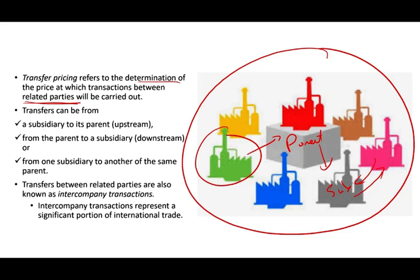Intercompany transactions represent a significant portion — billions of dollars — in international trade. That's why tax plays a big role in this topic, because when transfer pricing occurs between those units, there are serious tax consequences when these units are located in different countries. To illustrate the point, let's work a simple example just to lay the ground.